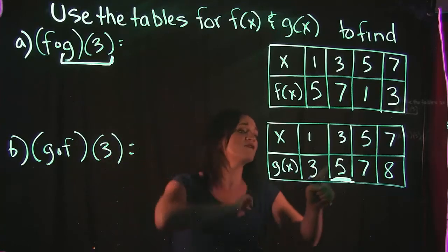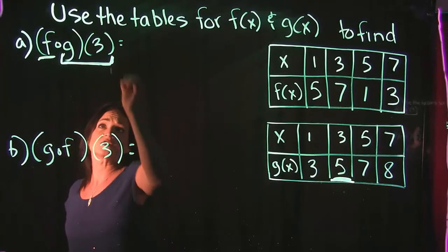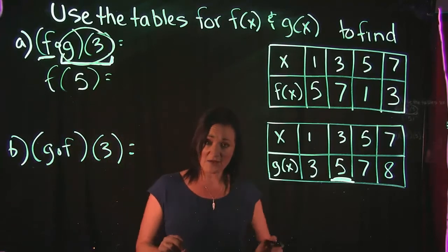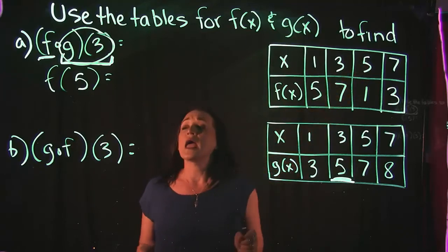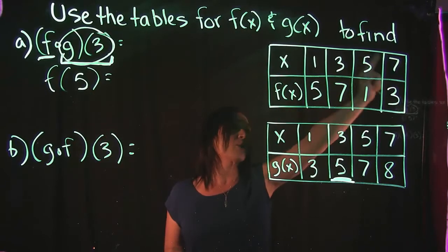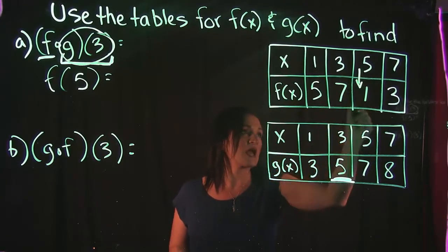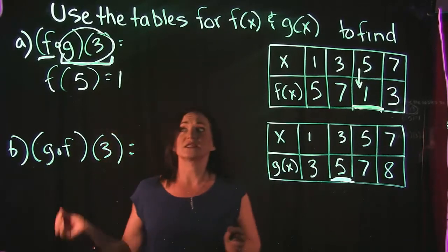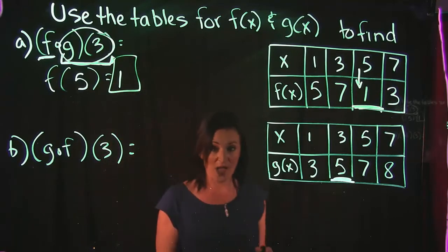Since g of 3 is 5, we now need to find the f part. This g of 3 equals 5, so now we need to find f of 5. We move up to the top table, and look for when the x value is 5. The top row is x values and the bottom row is y values. When x is 5, y is 1. So f of g of 3 equals 1.